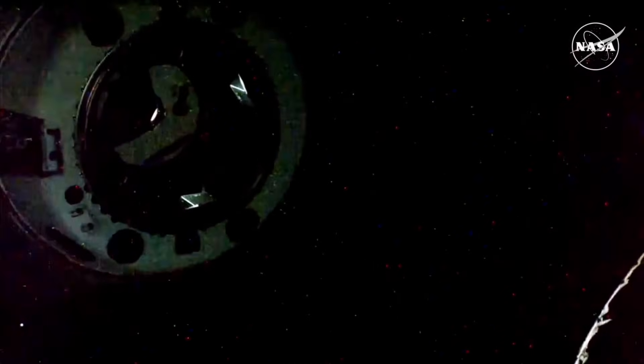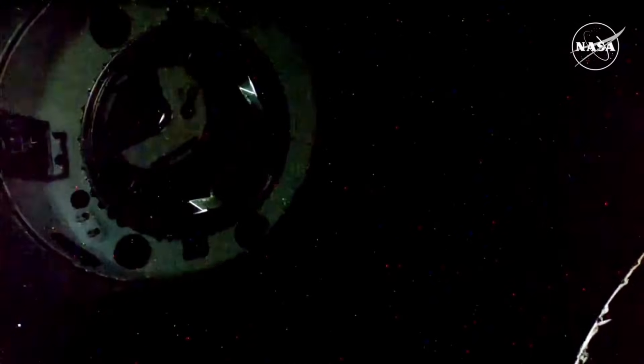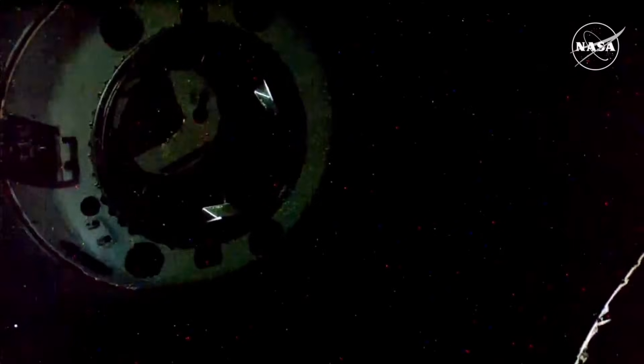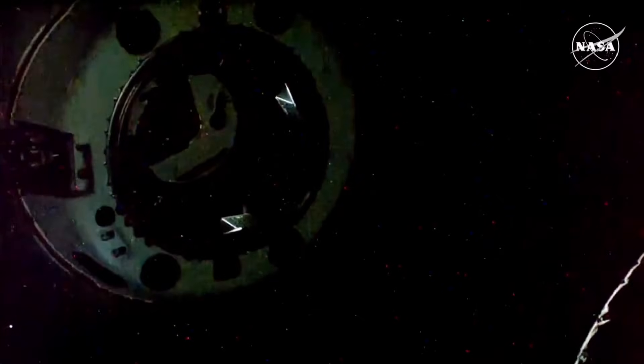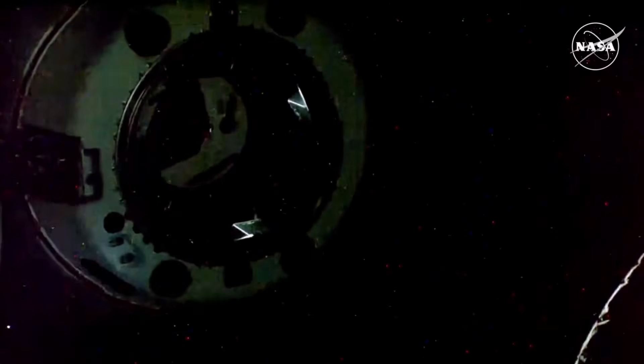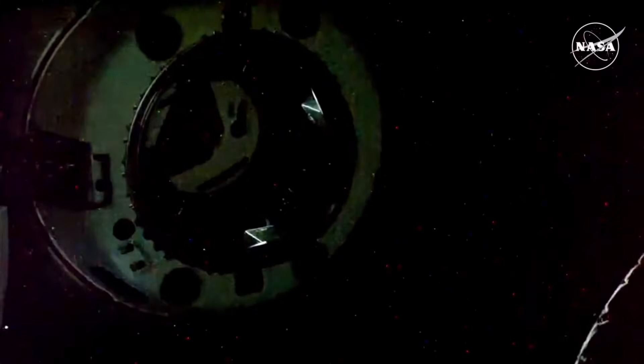Standing by for the arrival of crew nine to the International Space Station. We are also getting some pretty good views here of Dragon approaching Station, even though we are in an orbital nighttime and it's pretty dark. That's exciting to see how close these spacecraft are to each other. Now just about four meters away.